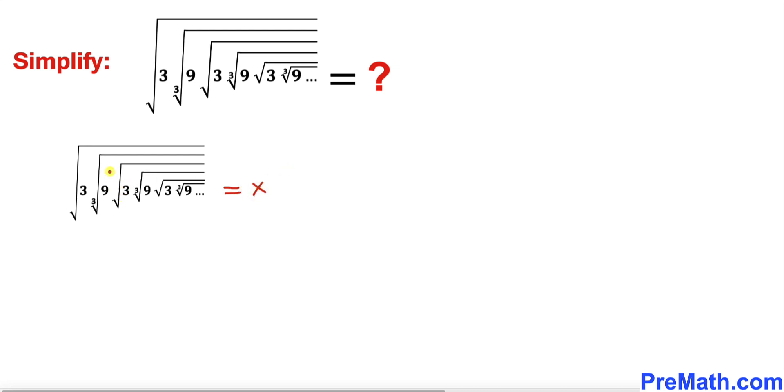Then we can see that this part is going to be x as well. So therefore our left hand side is going to become square root of 3 times the cube root of 9 times x equals x on the right hand side.